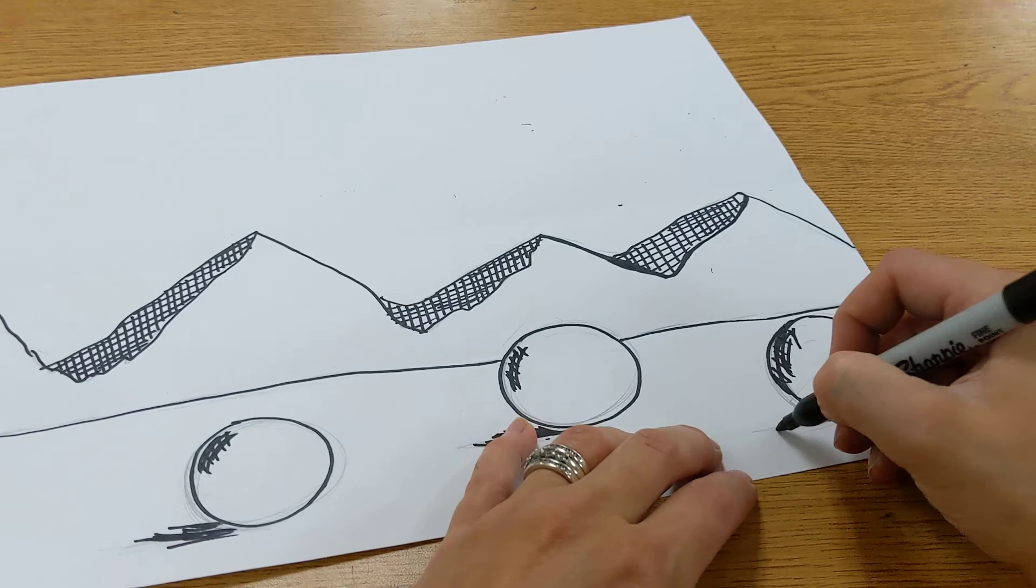Once you're finished adding shadow and depth to your landscape's horizon line and middle ground, you can go back in and erase any pencil lines that you still might see.